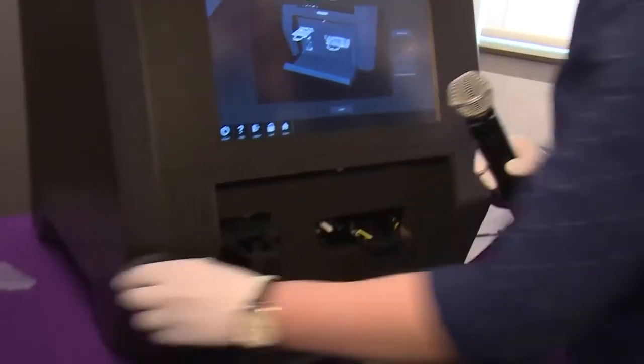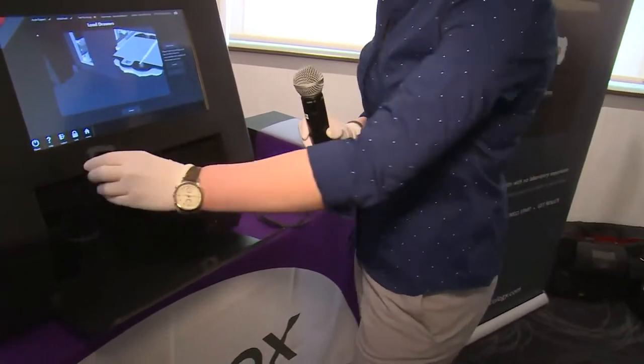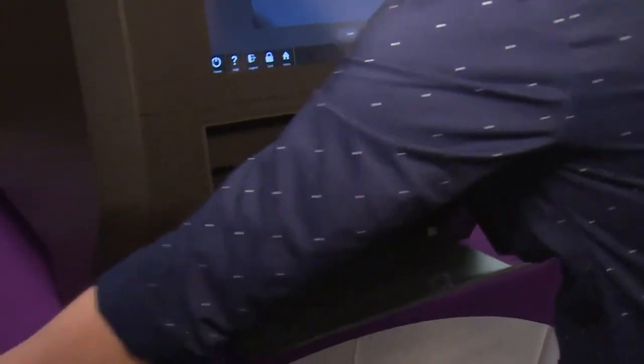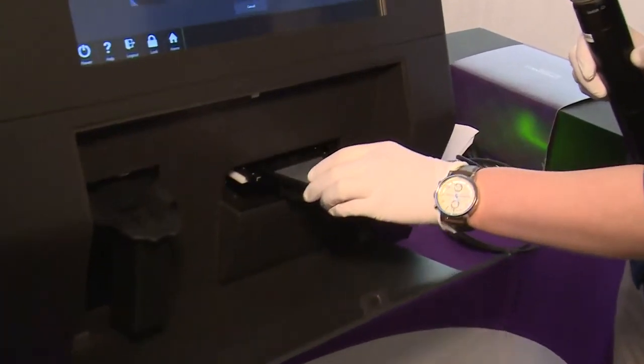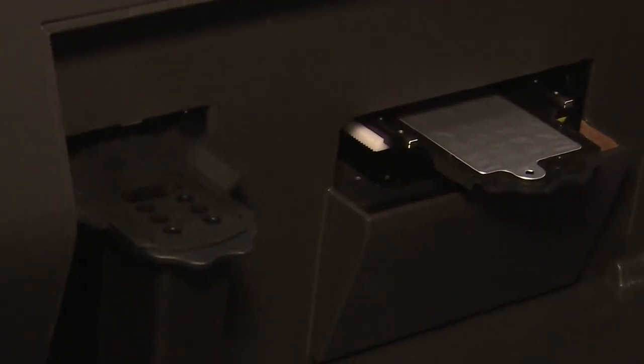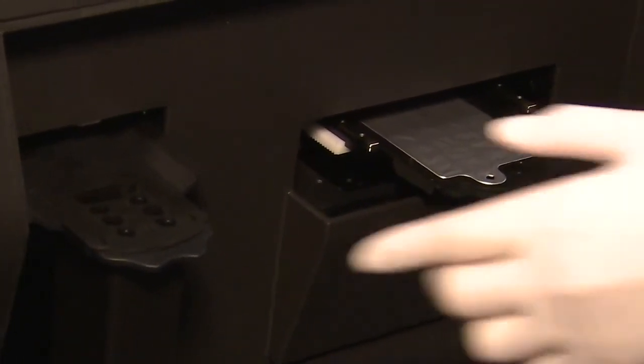These components can only be inserted one way, so there's no way to put them in incorrectly. They're all a dedicated shape. Load the tip box, which comes with disposable tips and collects all waste so there's no waste left on the machine.